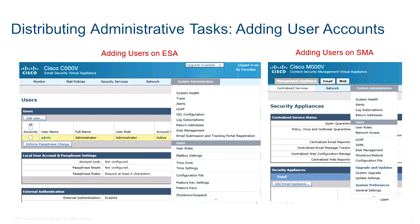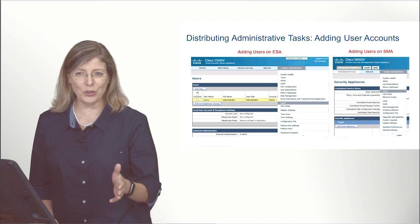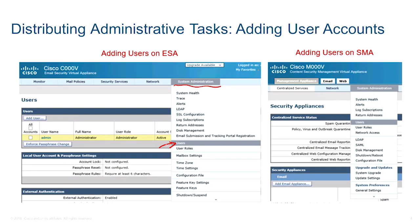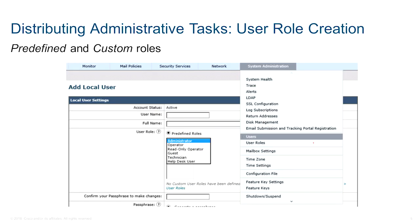When you go under System Administration under Users, the term 'users' refers to the administrators of the box. There are multiple roles that already exist. The Administrator role is the almighty — it can do anything inside the box. Then there is the Read-Only Operator, who can read but cannot write or create new administrators. You can also create your own custom role.